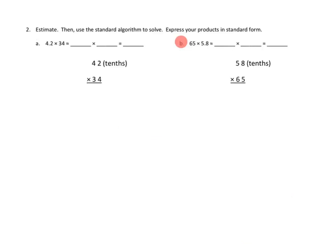Let's take a look at one more problem from tonight's homework. Problem number two asks us to do the following. Estimate. Then use the standard algorithm to solve. Express your products in standard form. Well, let's see. We've got our first estimate, and we're going to look at 2b. We're going to estimate 65 times 5 and 8 tenths.